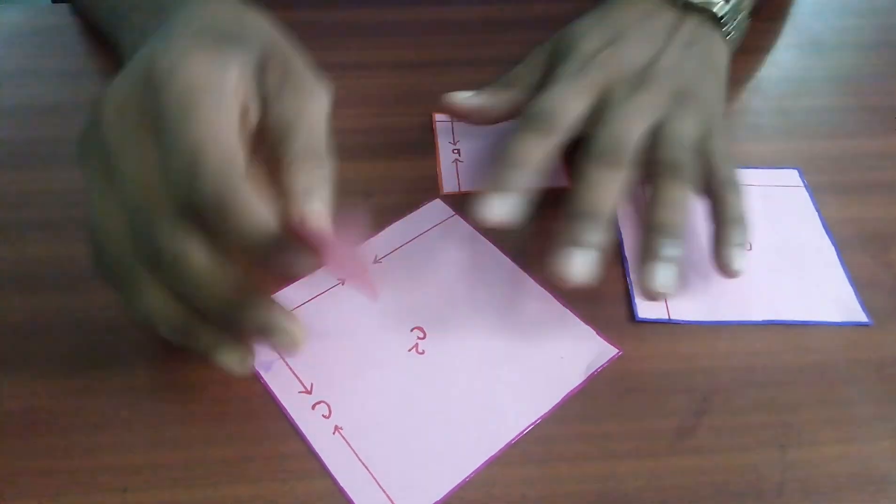Now, we will make four replicas of this right angle triangle.